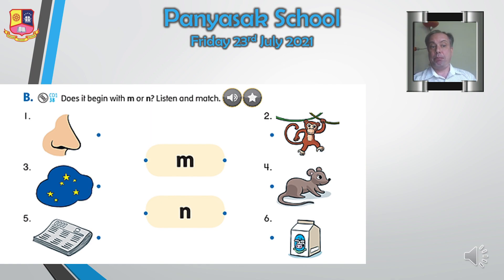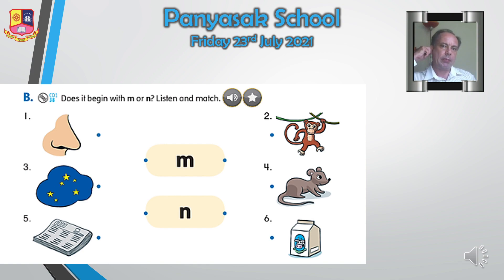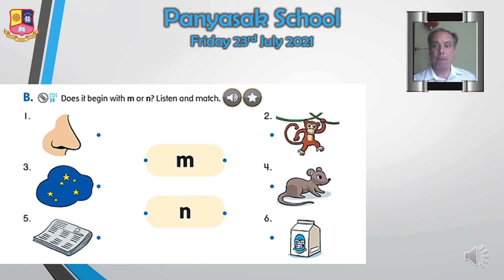Let's do exercise B — does it begin with M or N? You need a pencil and a ruler. I want you to make the lines with the ruler. You have to listen for the sound — if it begins with M, you connect with the M; if it begins with N, you connect with the N. I will play the sound two times. Please listen and match. Good luck, my friends!